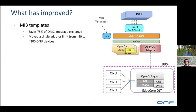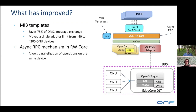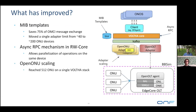This doesn't mean we cannot discover capabilities at runtime. Anytime a device connects, we check in the data store if we already know its capabilities — and if we don't, then we discover them. We were also able to introduce an asynchronous RPC mechanism in the core, which allows parallelization of operations on the same device. And we were able to horizontally scale the OpenONU adapter.